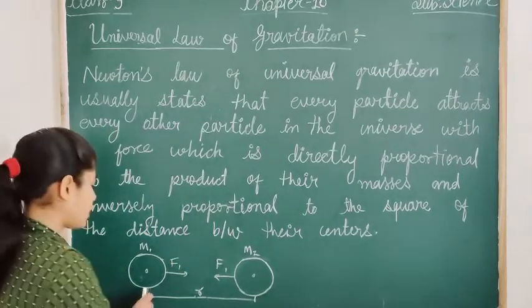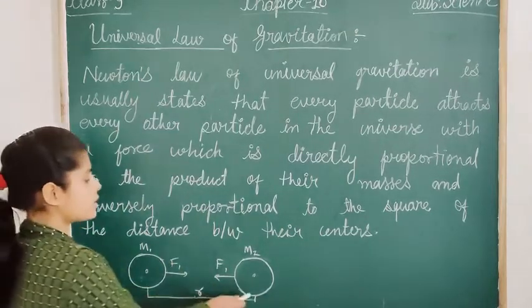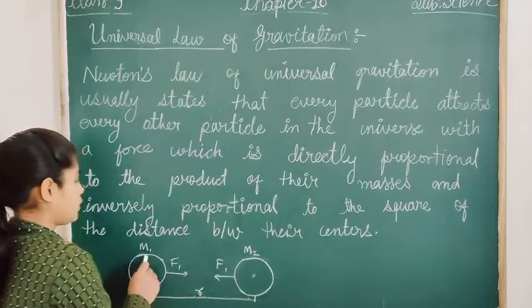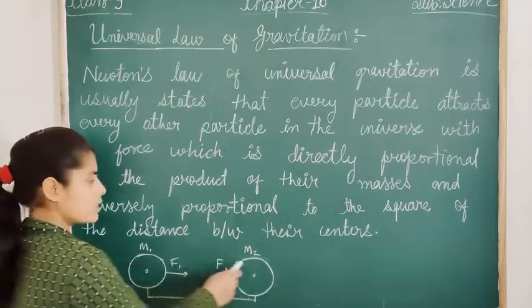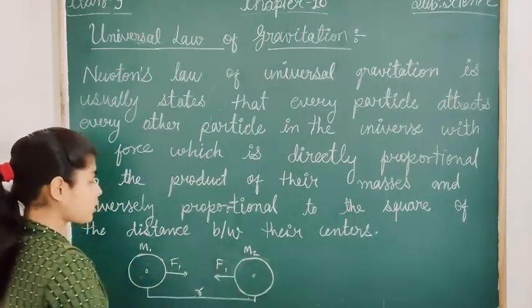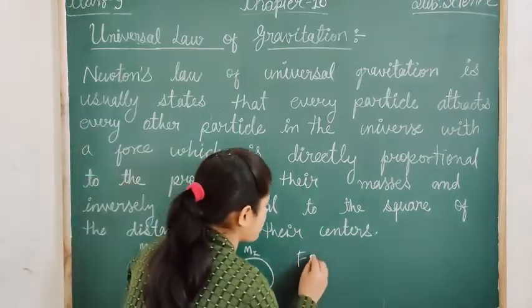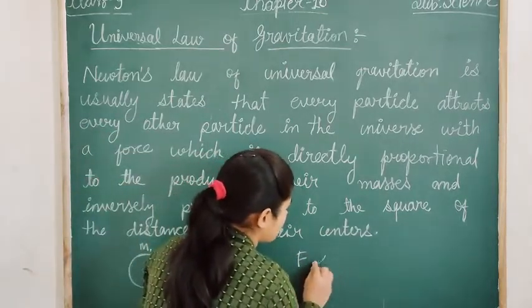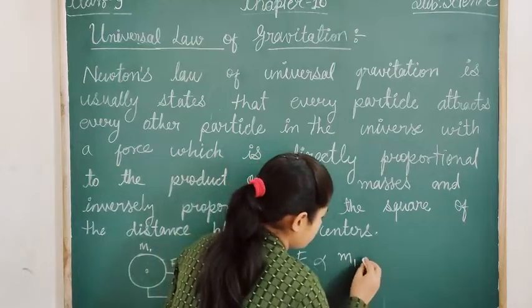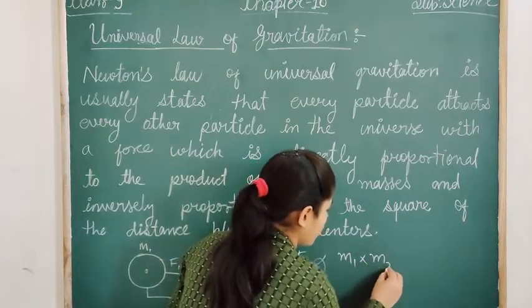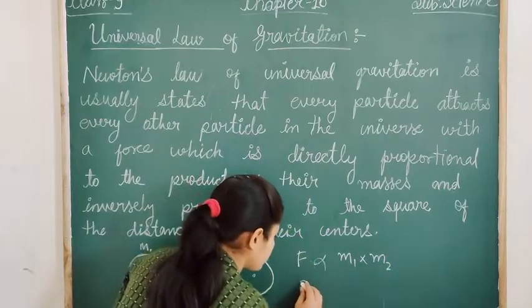This is our first object. This is our second object. This is M1, this is M2. Now the force is proportional to M1 times M2 and inversely proportional to the distance between the objects.